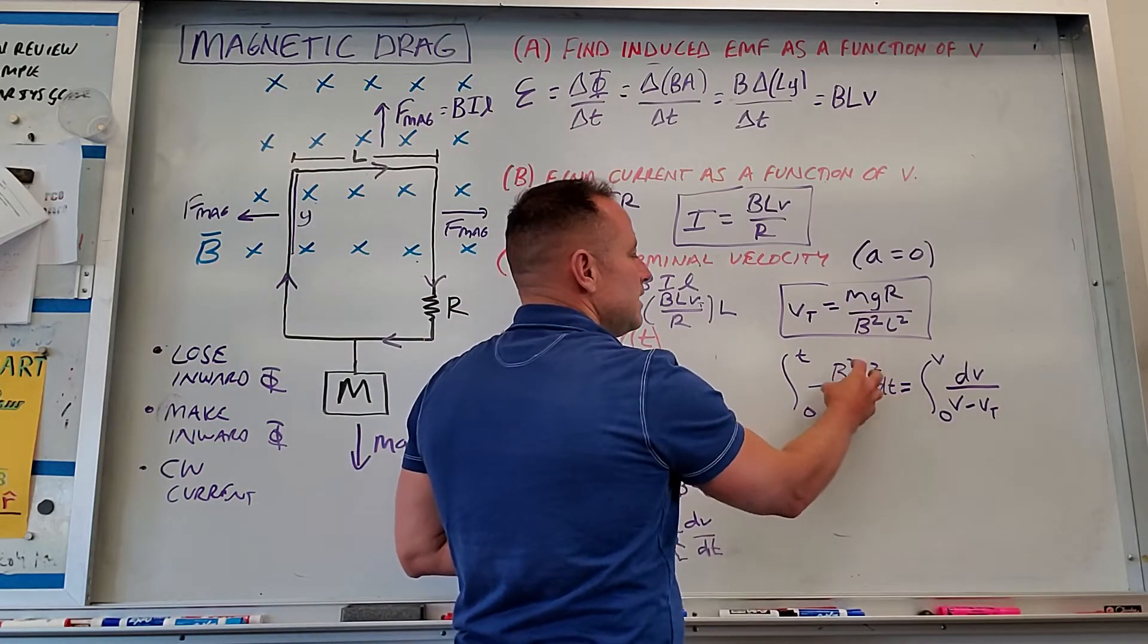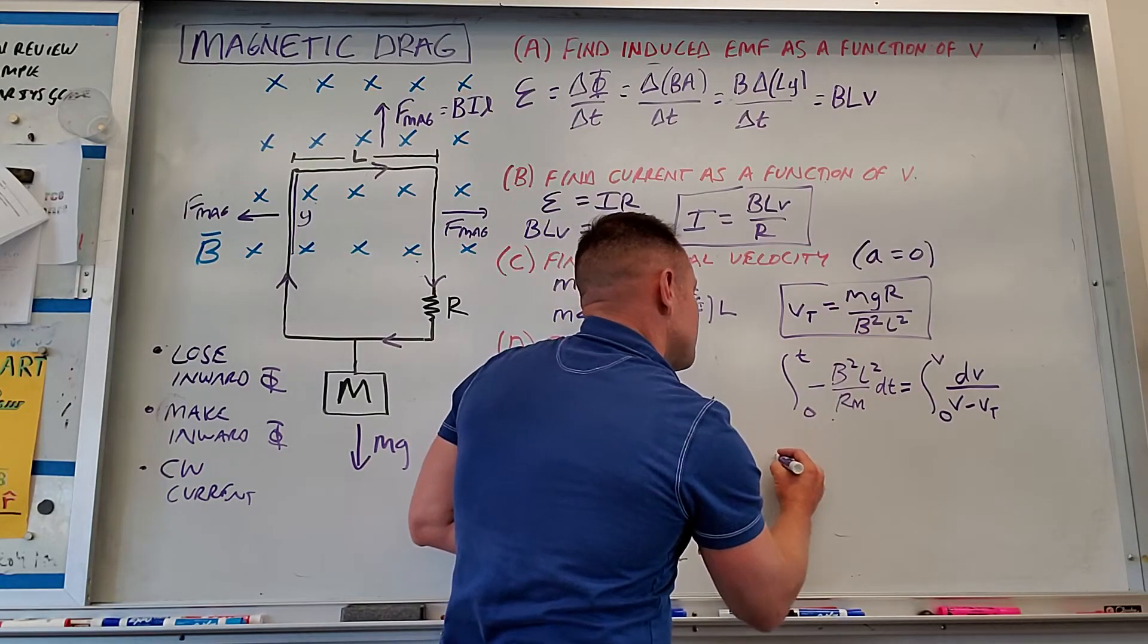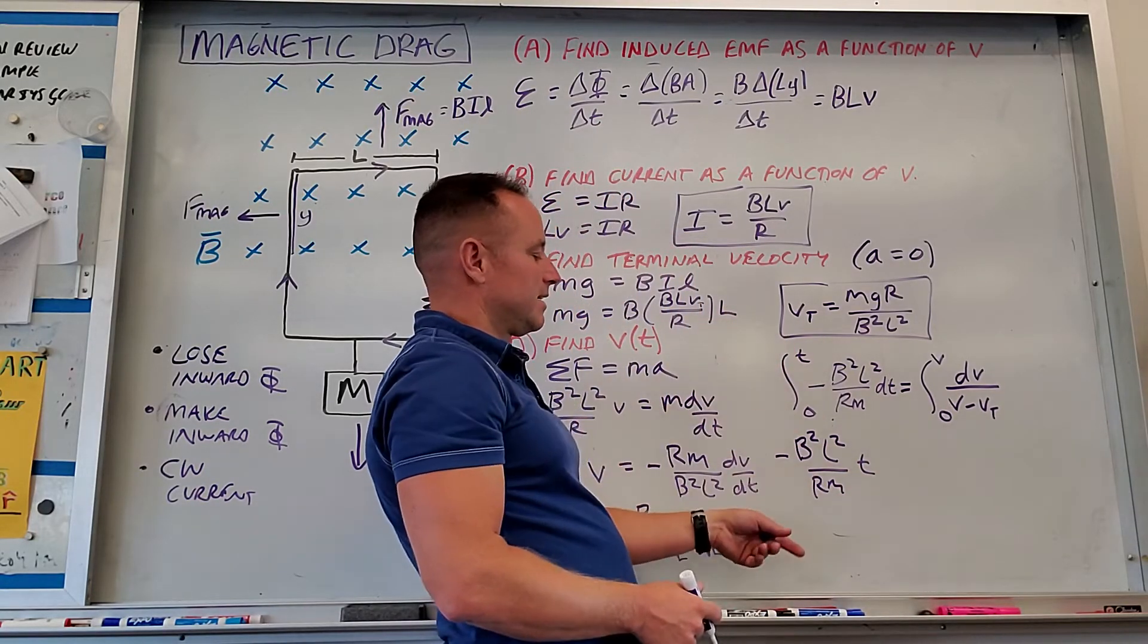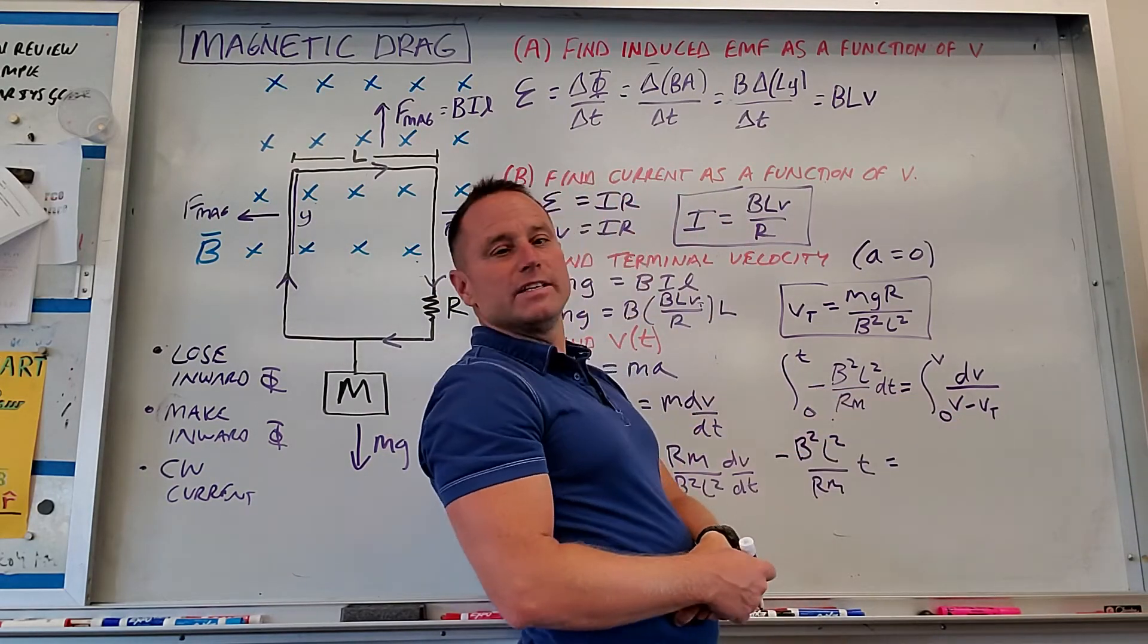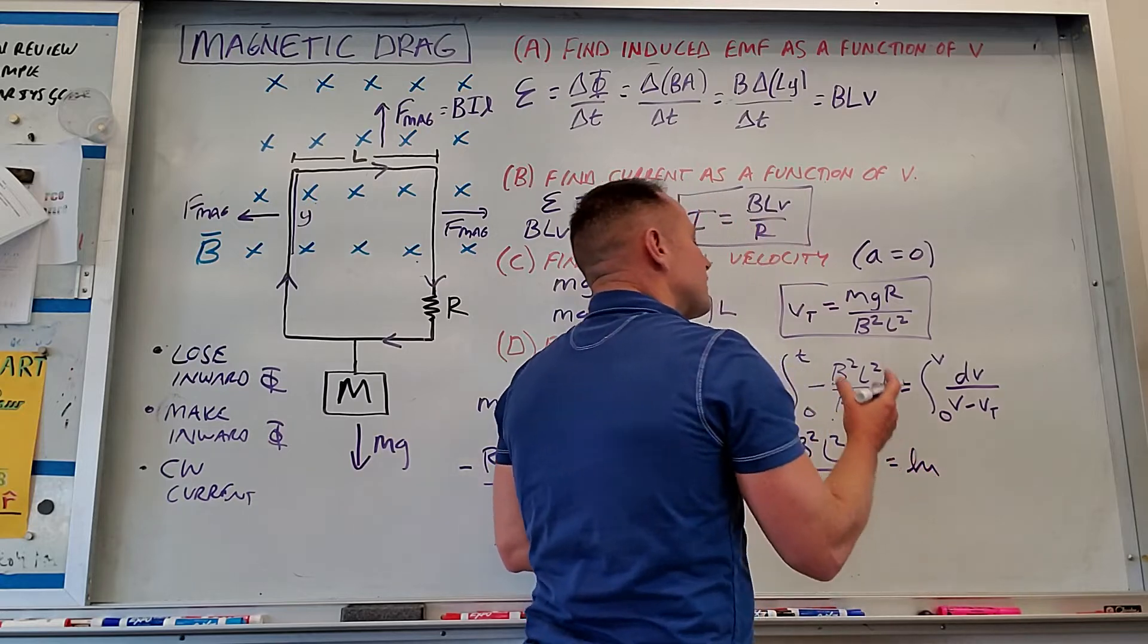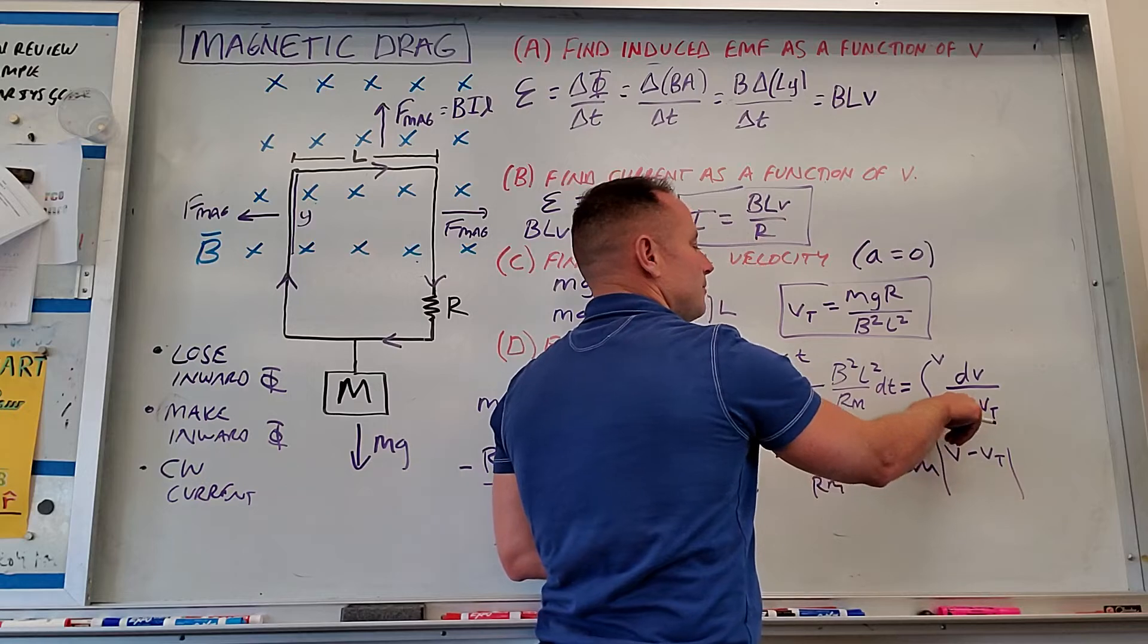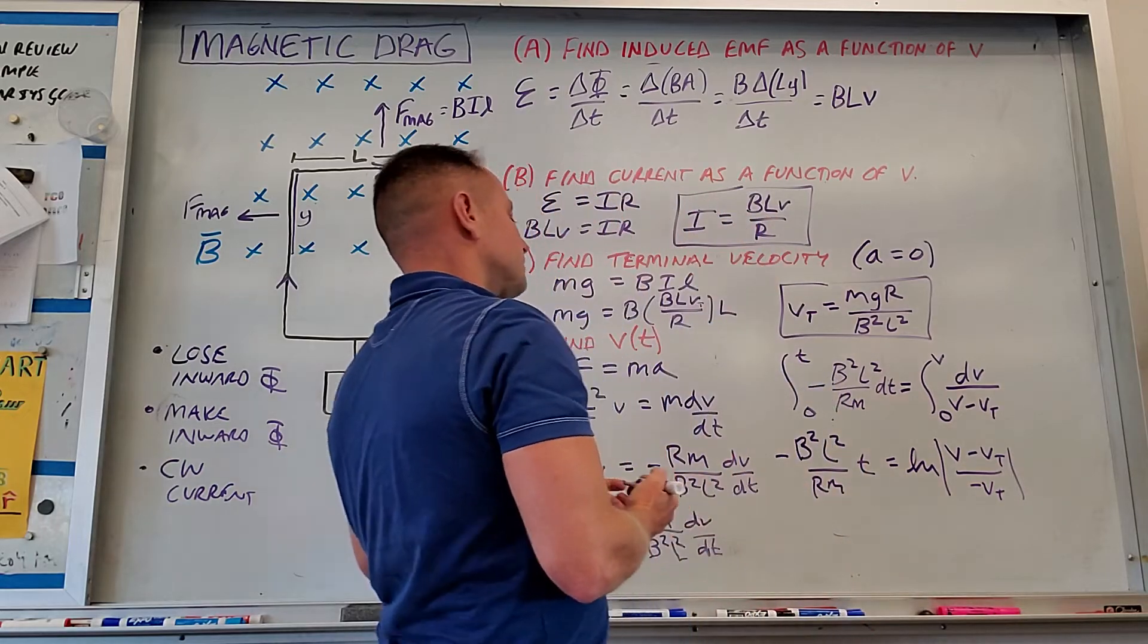And so now we'll just quick work this out. Left integral, very easy. You have a bunch of constants, just integral dt from zero to t. So this side is just going to be minus B squared L squared over Rm times t. Eventually, this whole factor will be up in an exponent. You're going to see the exponential decay coming. This side, it's going to be log of V minus Vt. But you have to be careful here and not be lazy with the limits. So what you want to do is it'll be log of V minus Vt with the upper limit put in. So that is V minus Vt. And then over the same thing with zero plugged in. So you're going to get a minus Vt in the denominator here. So we're almost done.